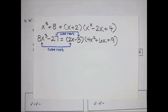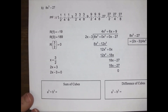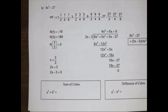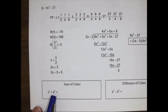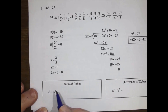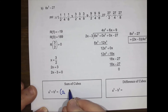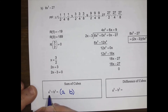Sum and difference of cubes is really a shortcut, just like difference of squares is a shortcut — a shorter way of doing what would otherwise be a lot of work, though the shortcut itself is a little strange. So if I have a cubed plus b cubed, I take the cube root of the first term to get a, and the cube root of the second term to get b, and I leave the sign the same.